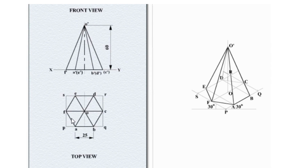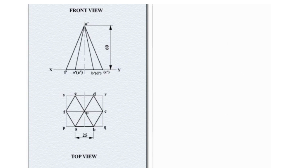Now inscribe this hexagon into a square shape, and name the corners of the square as P, Q, R, S.